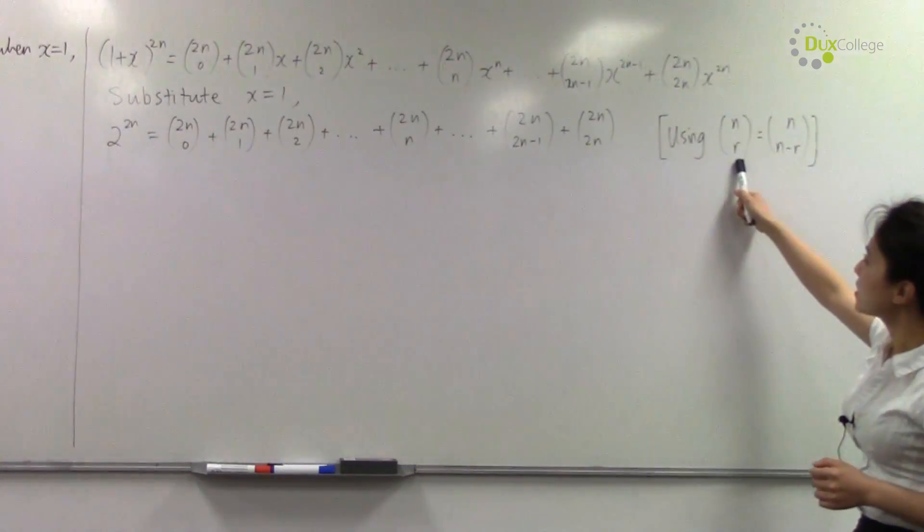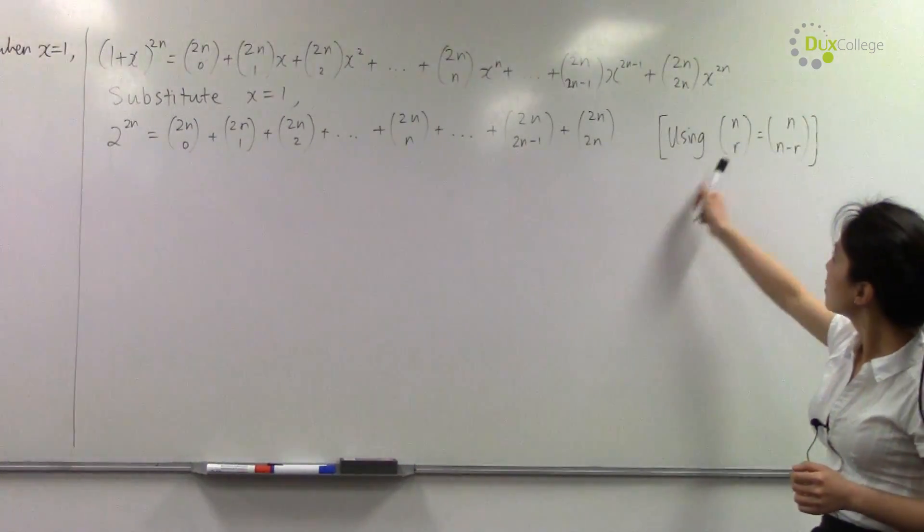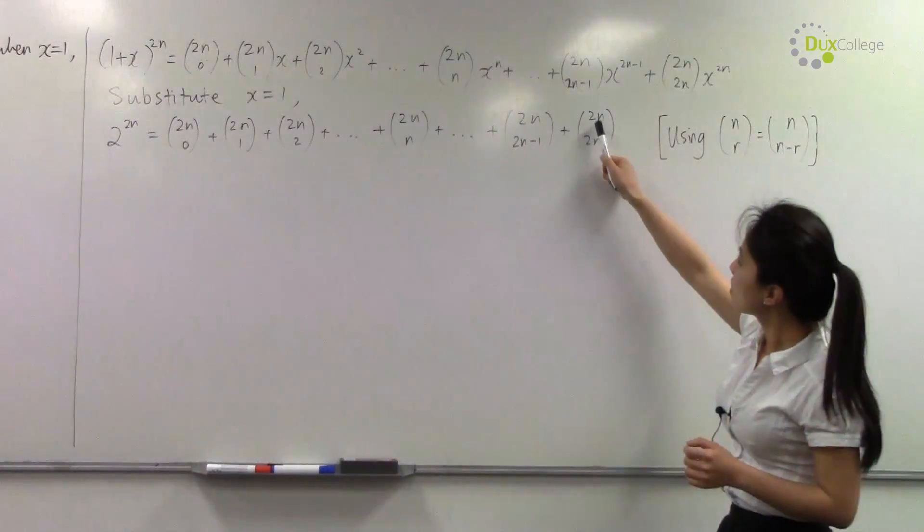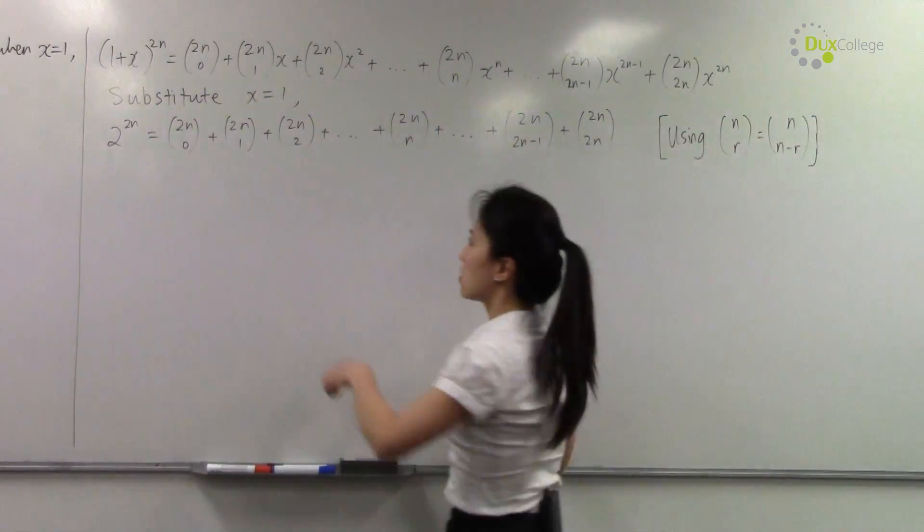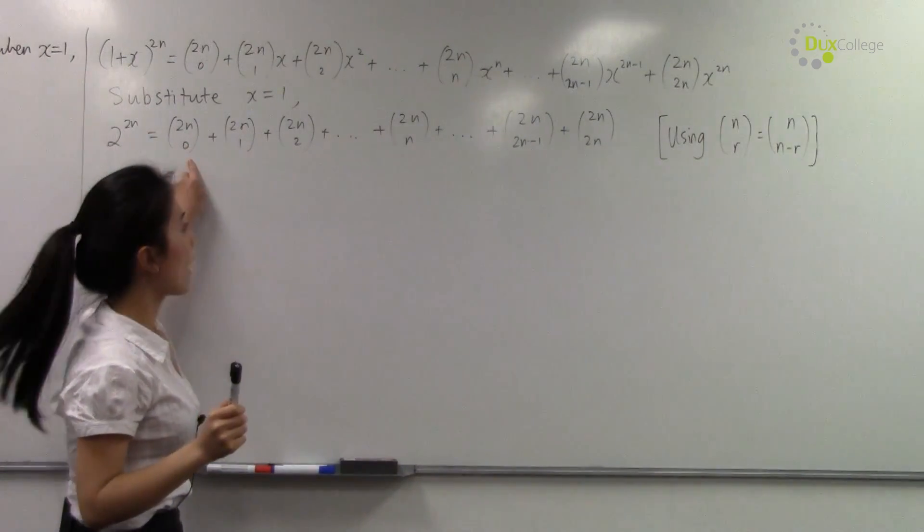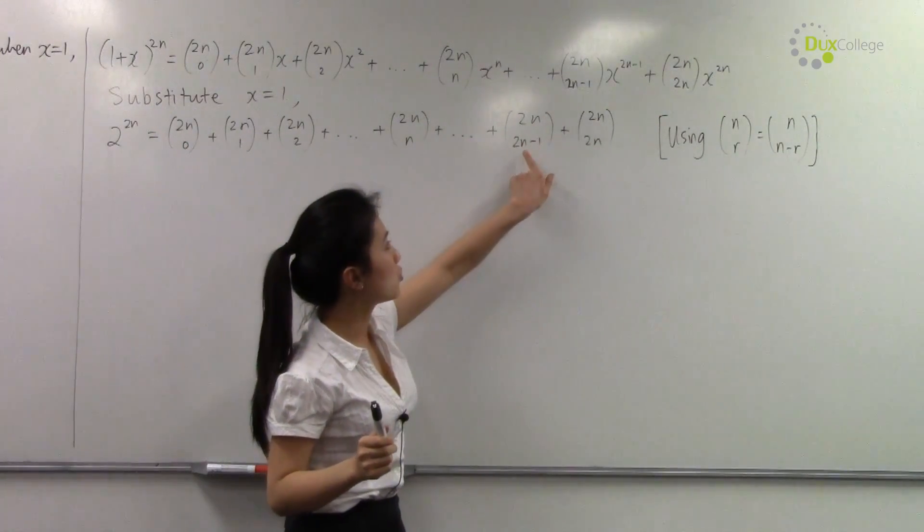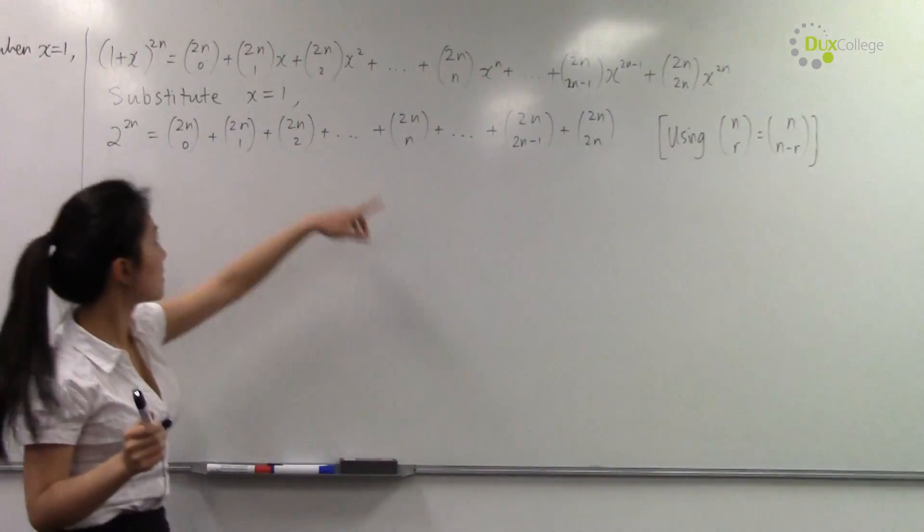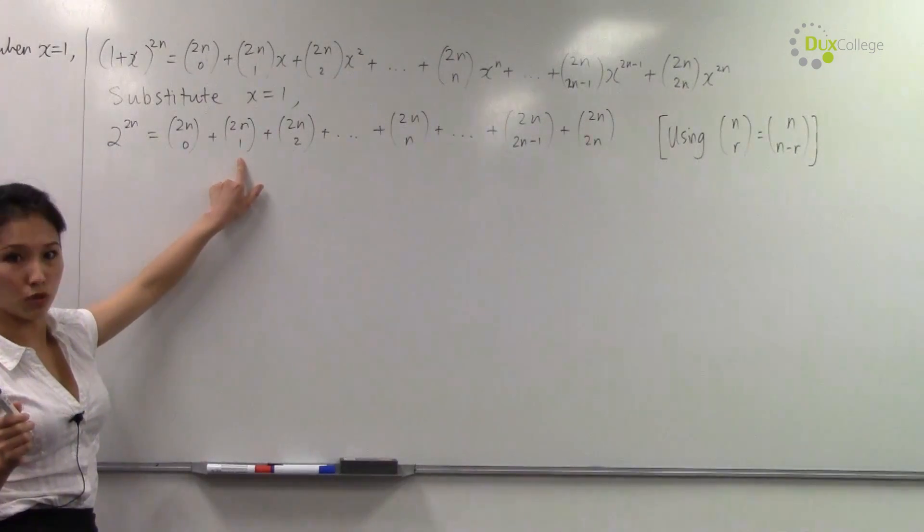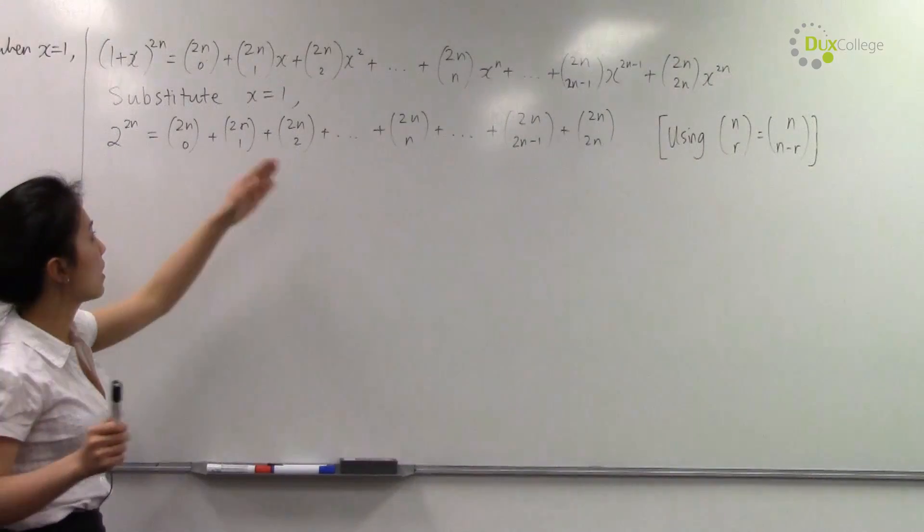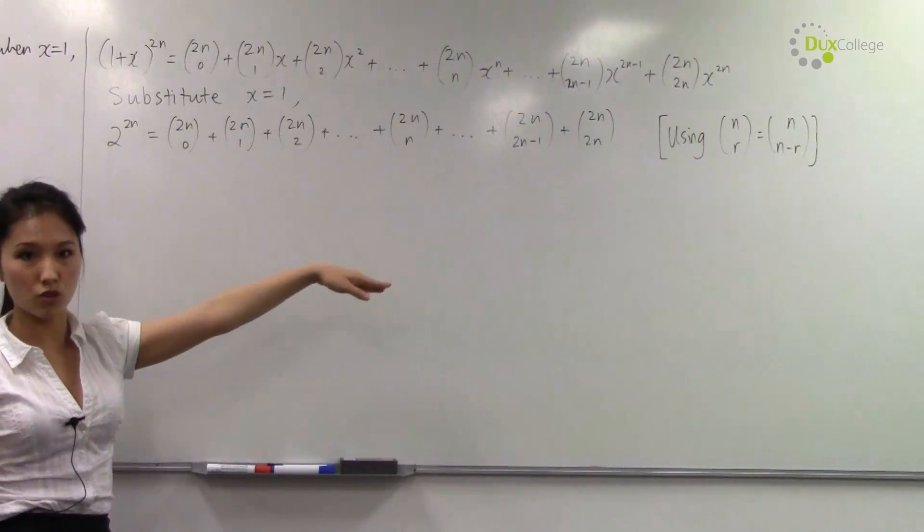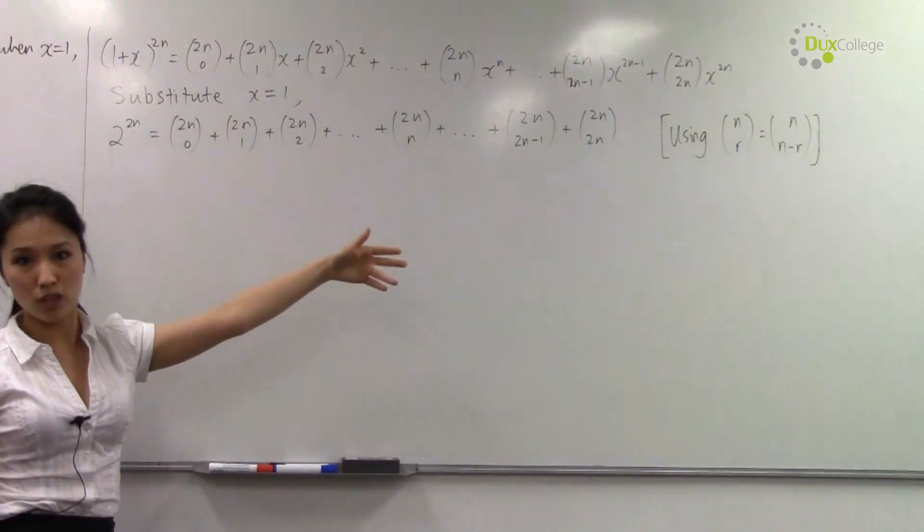Using this identity we can simplify this expression. Now what does this mean? It means 2n choose 2n is exactly the same as 2n choose 0, and 2n choose (2n-1) is exactly the same as 2n choose 1. Which means the first term equals the last term, the second term equals the second last term, the third term equals the third last term, and so on.